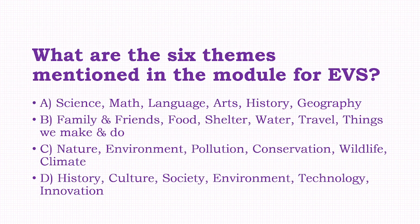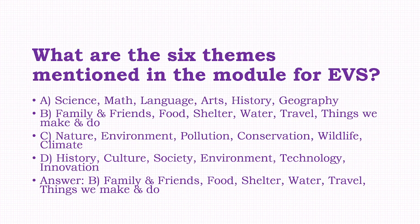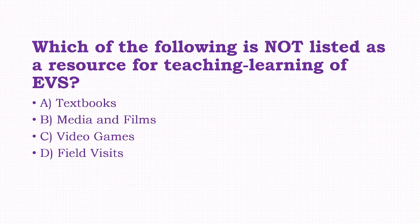What are the six themes mentioned in the module for EVS? Options: science, math, language, art, history, geography; or family, friends, food, shelter, water, travel, things we make and do; or nature, environment, pollution, conservation, wildlife, climate; or history, culture, society, environment, technology, innovation. The answer is option B, that is family, friends, food, shelter, water, travel, and things we make and do.